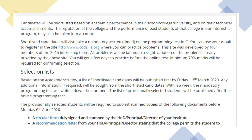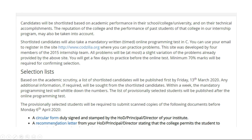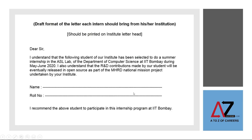The selection results will be announced by 13th of March 2020, and this is a seven-week program. When applying, first and foremost there is a circular form which has to be signed by the HOD, principal, or director of your institute. It's a pretty simple form — it covers your name, mobile number, and so on. It's essentially a permission letter from the college saying they are okay with you applying to this program. A recommendation letter from your HOD or principal is also required, and it's a short letter — none of you should have a problem getting these done.